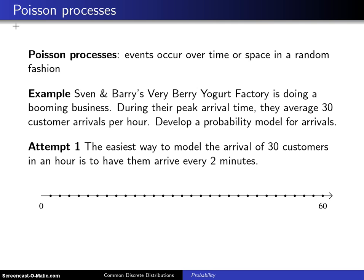is thinking of the Poisson distribution in terms of something that is known as a Poisson process. The general notion behind a Poisson process is that events occur over time or space in a random fashion. We'll come back to this time or space notion a little bit later, but for right now we're going to think of events occurring over time and in this example the events will be arrivals to a yogurt factory.